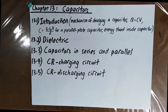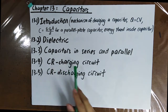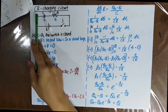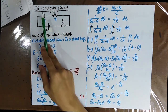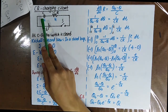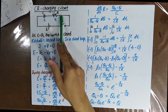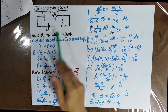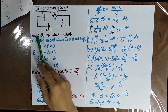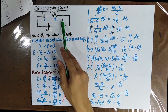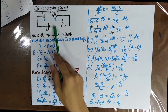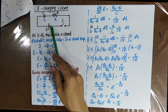In this video, we'll be talking about the CR charging circuit. A CR charging circuit is like this: there is a capacitor connected in series with a resistor, and then you have a switch S. At time equal to zero, the switch S is closed. When you see the battery is here, you know that it is charging the capacitor.